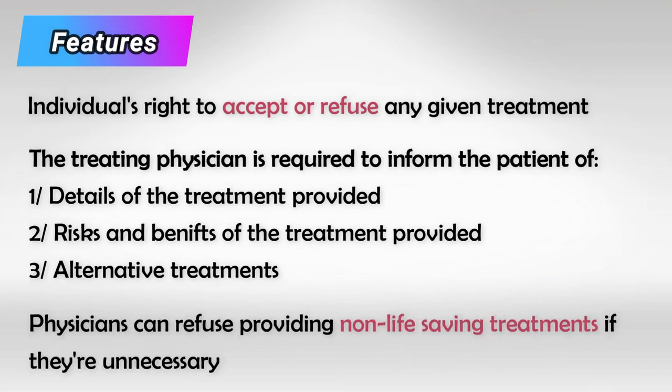Now autonomy can work both ways — the treating physician can have autonomy of their own. For example, if a pregnant woman is in her third trimester and she requests a cesarean section, but the treating doctor knows that this patient can deliver vaginally with no problems and there are no medical reasons for cesarean section, the physician can practice their own autonomy and refuse providing this elective treatment.